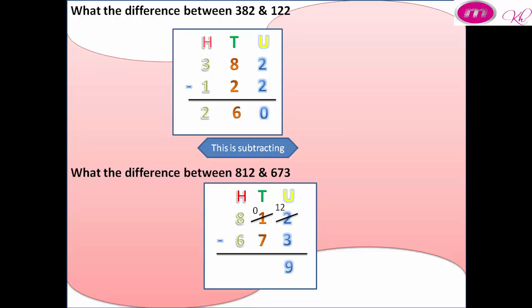We cannot subtract 7 from 0, so we borrow 1 from the hundreds. Zero becomes 10 and 8 becomes 7. Ten minus 7 equals 3. Seven minus 6 equals 1.